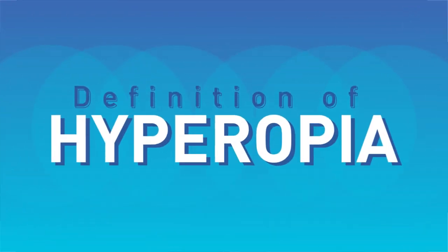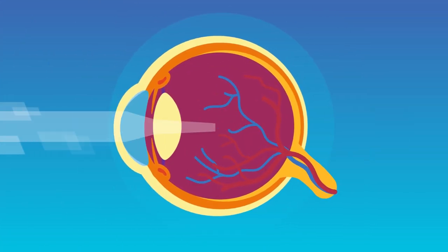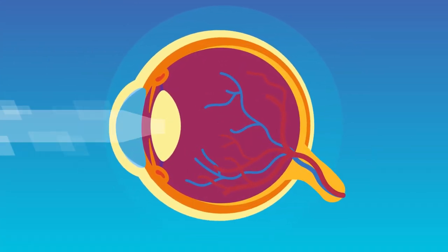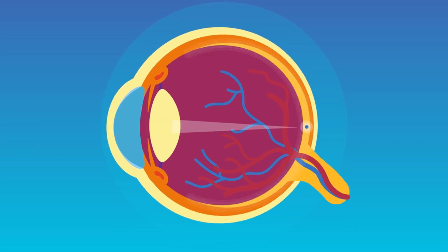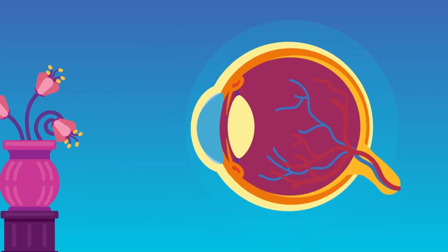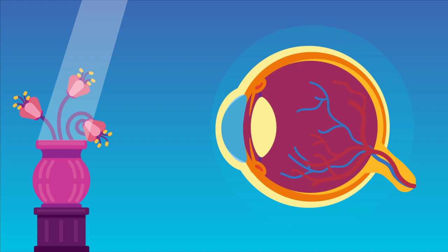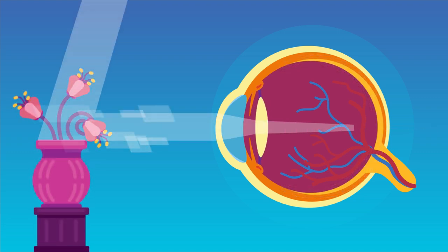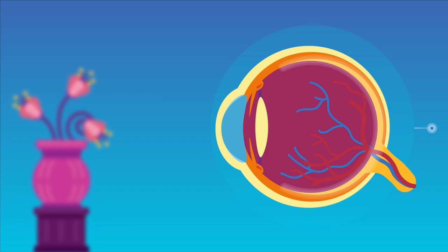Definition of hyperopia: It is a form of refractive error, inability to refract or bend, focus the light rays properly, in which parallel rays of light, coming from the distant object, after entering the eye, are focused behind the retina, with accommodation, eye muscles, at rest.